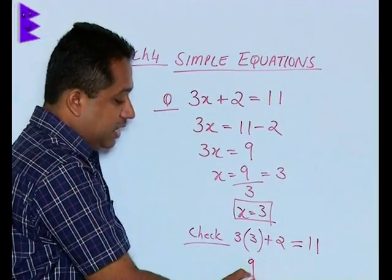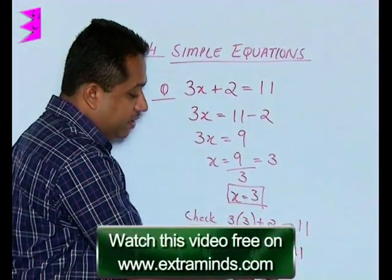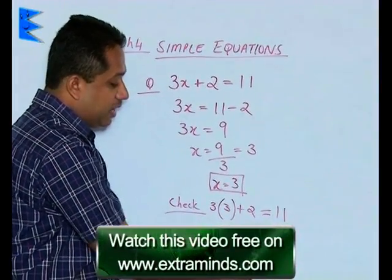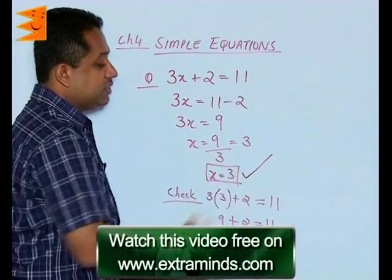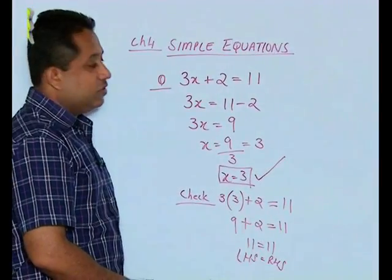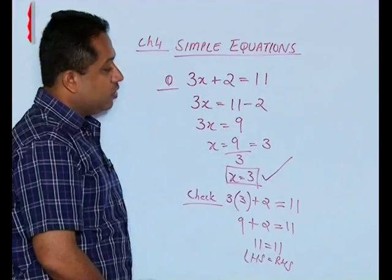So 3 × 3 = 9, plus 2 = 11. We get 11 = 11. Now LHS equals RHS, and this indicates that our solution x = 3 is correct. This is how we verify whether the value of x we have got is correct or wrong.